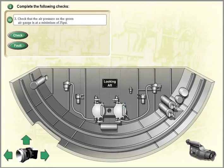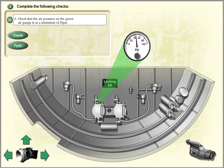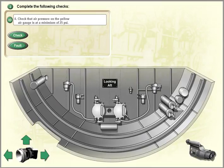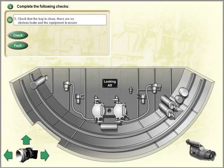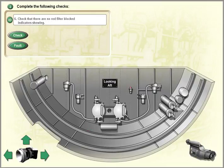Check that the air pressure on the green air gauge is at a minimum of 25 PSI. Check that the air pressure on the yellow air gauge is at a minimum of 25 PSI. Check that the bay is clean, there are no obvious leaks and the equipment is secure. Check that there are no red filter block indicators showing.